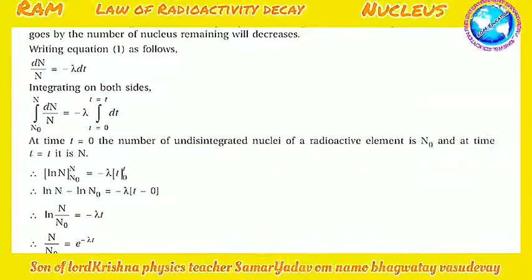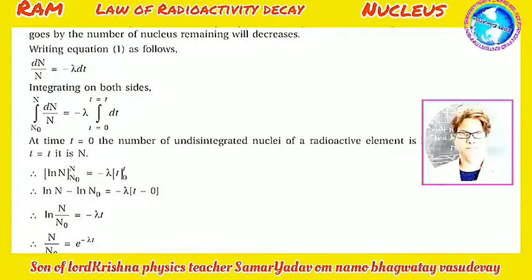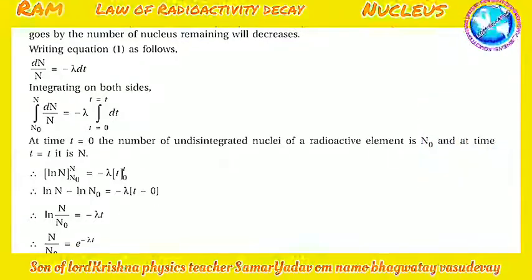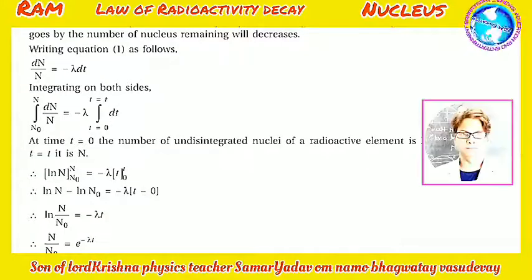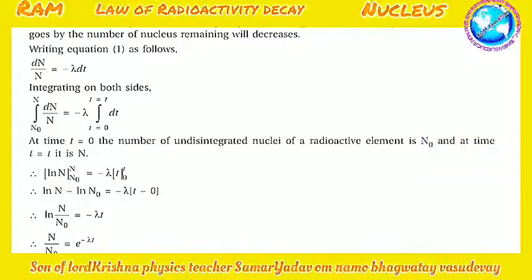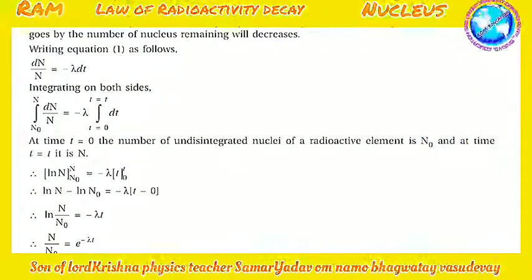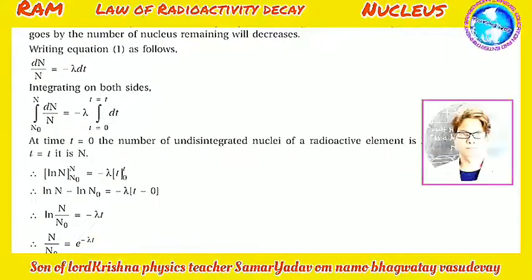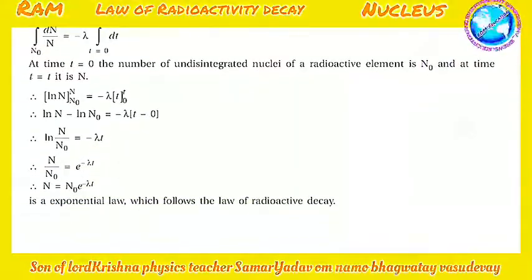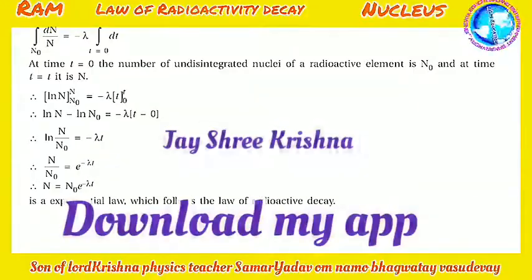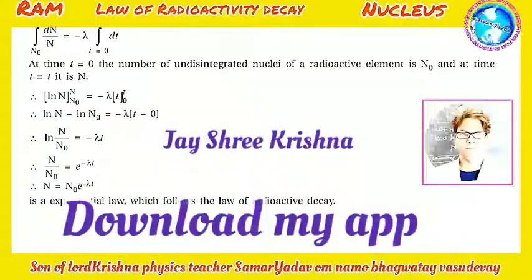Integrating: ln N − ln N₀ = −λt, so ln(N/N₀) = −λt, therefore N/N₀ = e^(−λt), giving N = N₀e^(−λt).